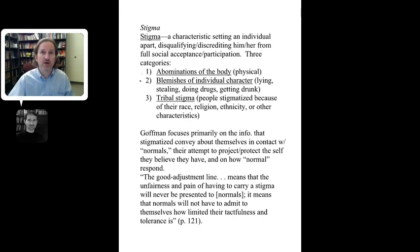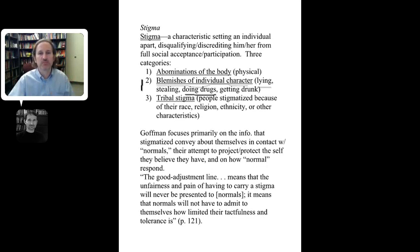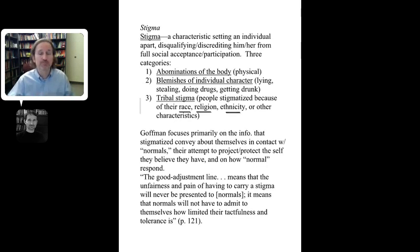Some forms of stigma are not visible — blemishes of individual character, such as being a liar or a drug user, with no obvious physical manifestation. Being an alcoholic is also a stigmatized identity. The third type is tribal stigma — stigmatization based on race, religion, or ethnicity. The go-to example is Nazi Germany, where Jewish people were blamed for everything from economic failure to declining morals to Germany's loss of World War One.